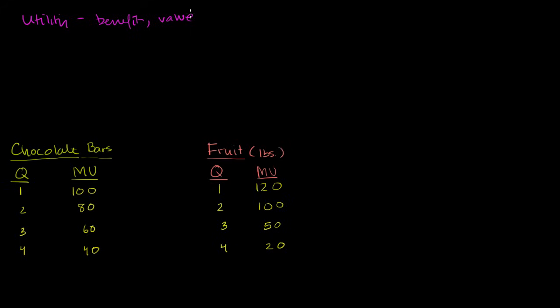The angle we're going to take in this video is going to be slightly different. In the past, when we were measuring benefit or value, we either measured in terms of dollars — where we said the benefit of getting an incremental Honda Civic was $5,000. When we talk about the incremental, we're talking about the marginal benefit.